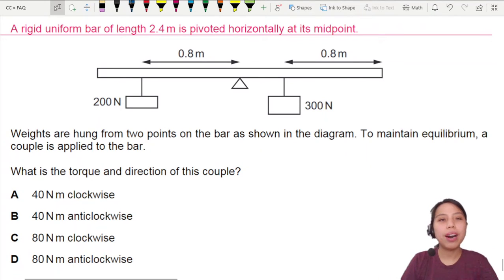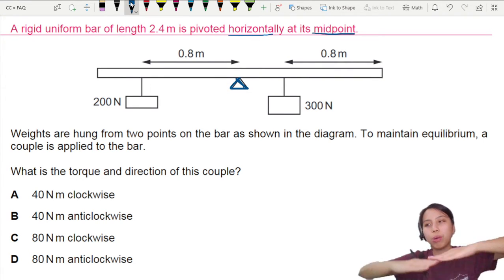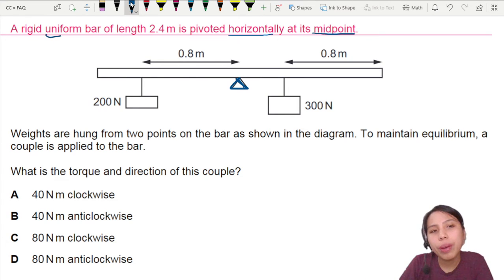A rigid uniform bar of length 2.4 meters is pivoted horizontally at its midpoint. So the pivot is our triangle right there in the middle. We're going to rotate about the triangle. A uniform bar, by the way, tells me that the weight is going to be right in the middle of the bar. Did they draw a weight in the diagram? No, they didn't. We should include the weight later.